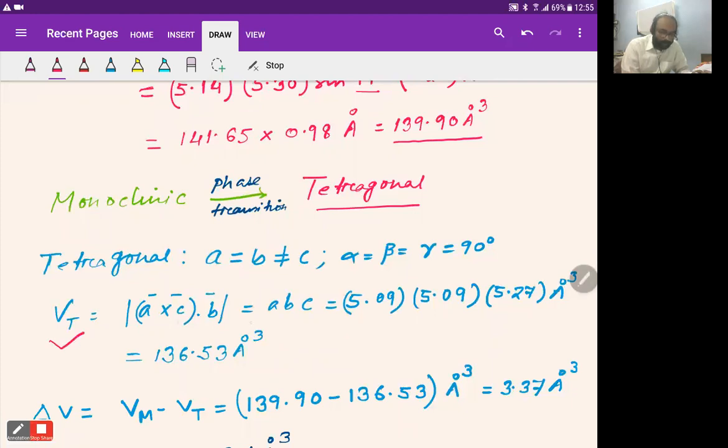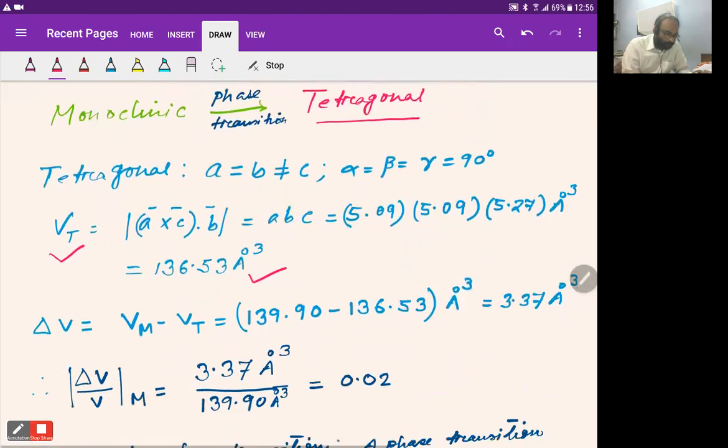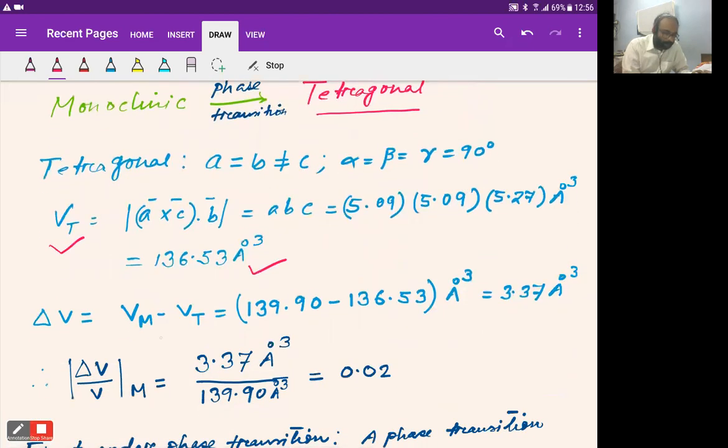Since a = b = 5.09 and c = 5.27, the volume Vt = 136.53 Ų. The change in volume ΔV = Vm - Vt = 139.90 minus